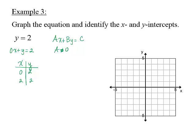0, 2, and 2, 2 are ordered pairs that satisfy this equation. When we plot 0, 2 and 2, 2, notice that they form a horizontal line through the y-value of 2. y equals a number is always the graph of a horizontal line. There are no x-intercepts for this graph, and the y-intercept is 0, 2.